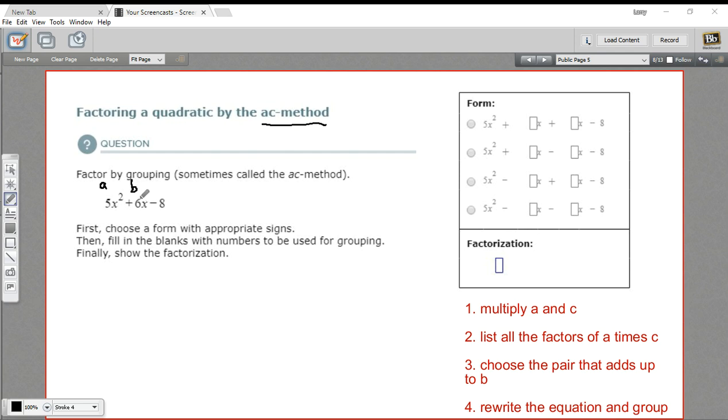The x term we call B, so B is 6 here, and C is our constant term, so in this case that's negative 8.